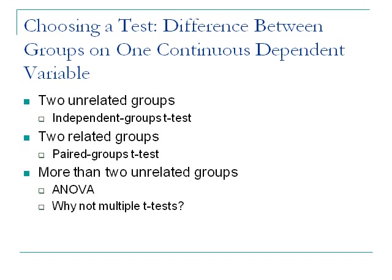The question arises: why not just do multiple t-tests — group one vs. two, one vs. three, two vs. three? That might be logically sound, but it's not typically done because of family-wise error: the likelihood of making a Type I error increases with the more tests you do. Each test using null hypothesis significance testing has some chance of a Type I error. The more times you do a test, the more the overall likelihood of making a Type I error increases.